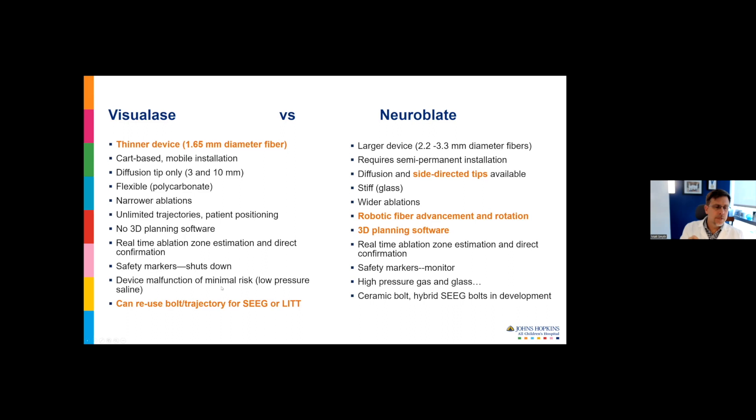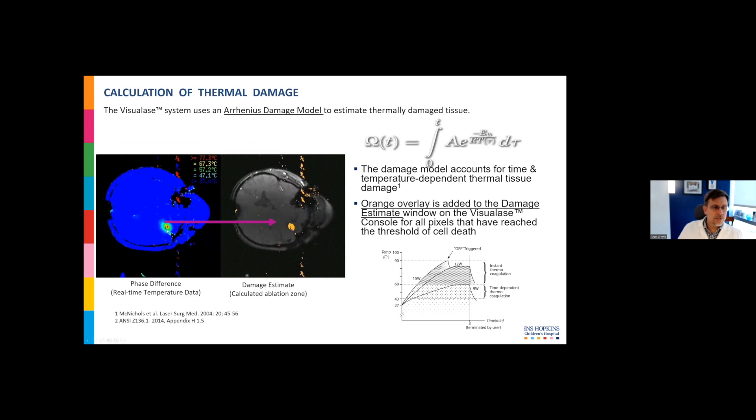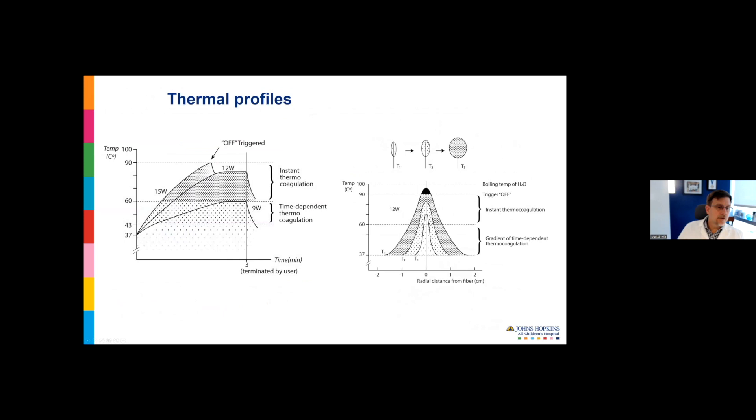This is what the thermometry looks like on a Visualase case. You can see the laser heat depositing during a run of ablation, and this is a thermal damage map being created. If you heat any part of the brain above 60 degrees, you have instant thermocoagulation. If you're below 43 degrees, you have reversible thermal injury. Between 43 and 60, dependent on time, you have irreversible thermal injury with protein denaturation and cell wall breakdown.